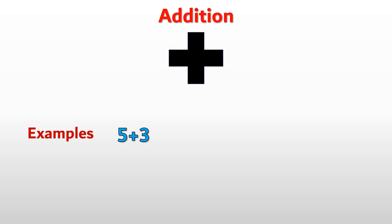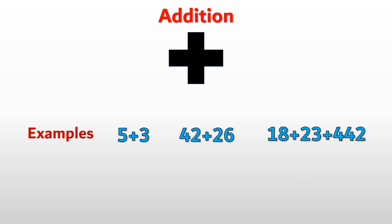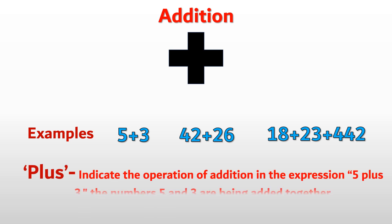Examples: 5 plus 3, 42 plus 26, 18 plus 23 plus 442. The plus sign indicates the operation of addition. In the expression 5 plus 3, the numbers 5 and 3 are being added together.